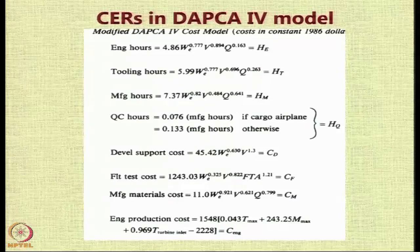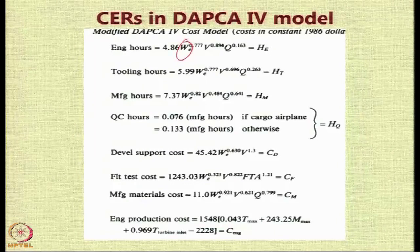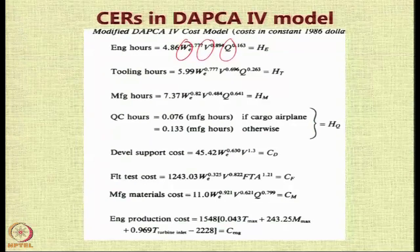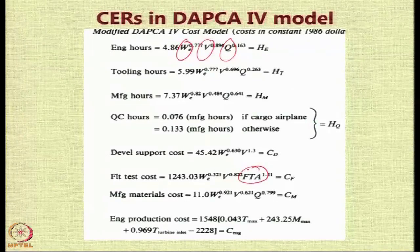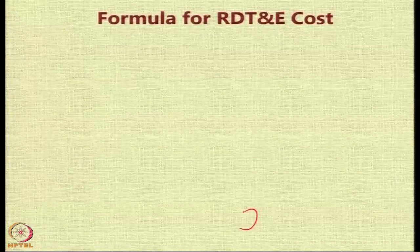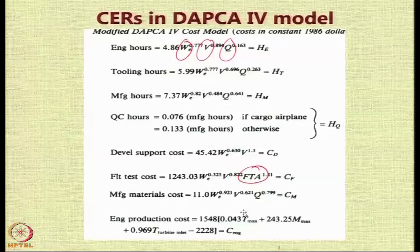What you need to understand is that the important parameters are the empty weight or DCPR weight of the aircraft, the maximum velocity, and the quantity to be produced. These are the three main factors, along with the number of flight test aircraft and maximum thrust, which all play a role.